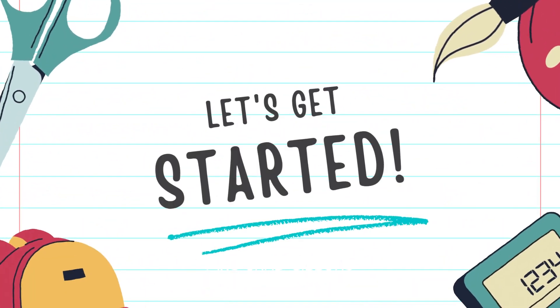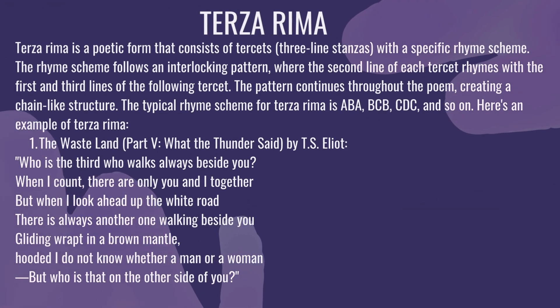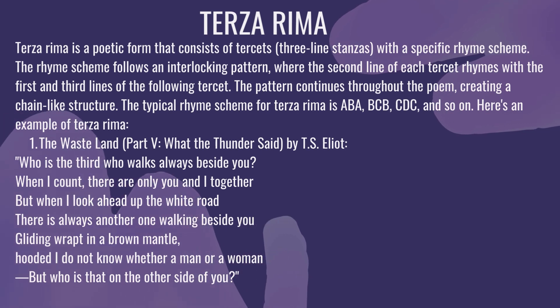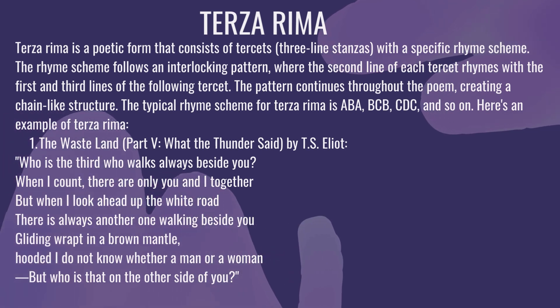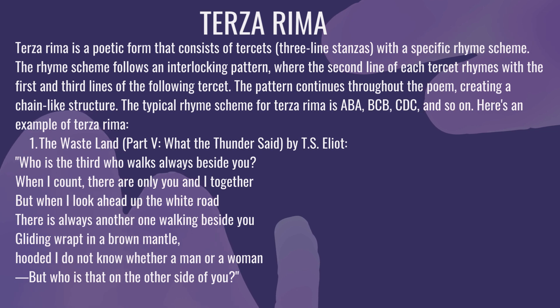Terza Rima is actually a poetic form that consists of tercets. A tercet, as I have also guided you in many videos, is actually a three-line stanza. If you can see three-line forms in a stanza, it means that this is a tercet.